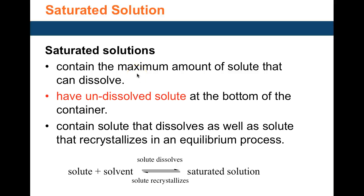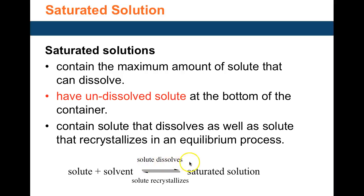A saturated solution is one where the solution has the maximum amount of solute and a little bit remains undissolved at the bottom of the container. There is an equilibrium between the solute dissolved in the solution and the solute outside of it. This is a dynamic equilibrium — it goes back and forth — indicated by a double arrow. The forward arrow shows solute going into solution; the reverse arrow shows solute coming back out.